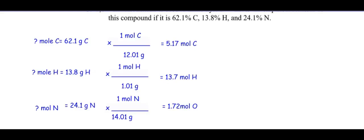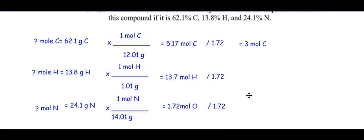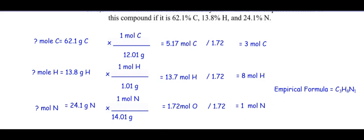Here's how I worked out the last problem. Percent to grams: I have all my grams. Grams to moles: factor label with molar mass on the bottom and one mole on top. Divide by smallest — the smallest is 1.72. So: 5.17 ÷ 1.72 ≈ 3, then 13.7 ÷ 1.72 ≈ 7.98, almost exactly 8, and 1.72 ÷ 1.72 = 1. So the empirical formula is C₃H₈N₁. That is how you find empirical formulas — don't wait to be great, see you next time!